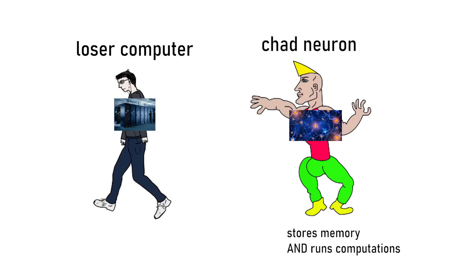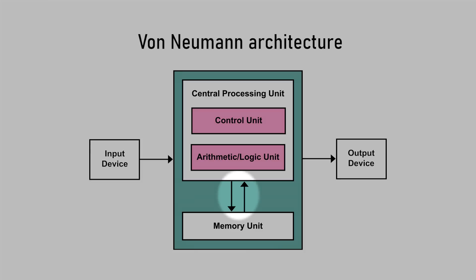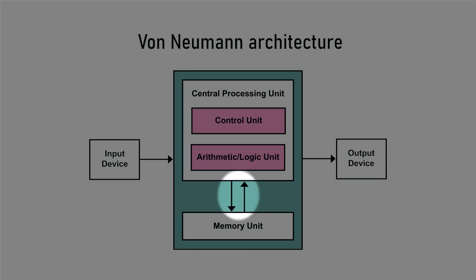You see, in the human brain, neuron connections are simultaneously responsible for storing memory and running computations. But in most modern computers, those two functionalities are performed by separate components, something called the von Neumann architecture. A lot of time is spent just moving data between the memory part and the computation part, which makes it really inefficient to emulate human intelligence on a computer.